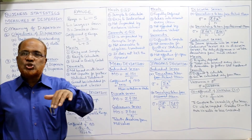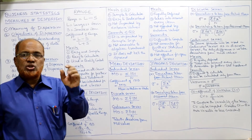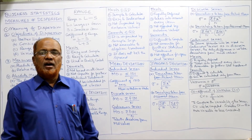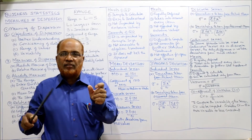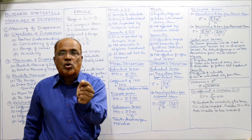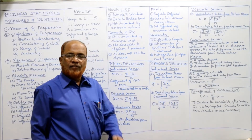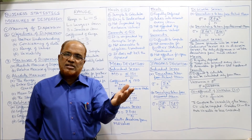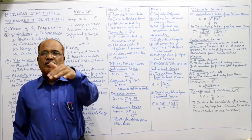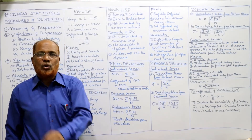Variance is the square of standard deviation. If you square the standard deviation (sigma squared), you get the variance. If you want to find variance, square the standard deviation. If you want to find standard deviation, take the square root of variance. Standard deviation equals the square root of variance, and variance equals standard deviation squared.